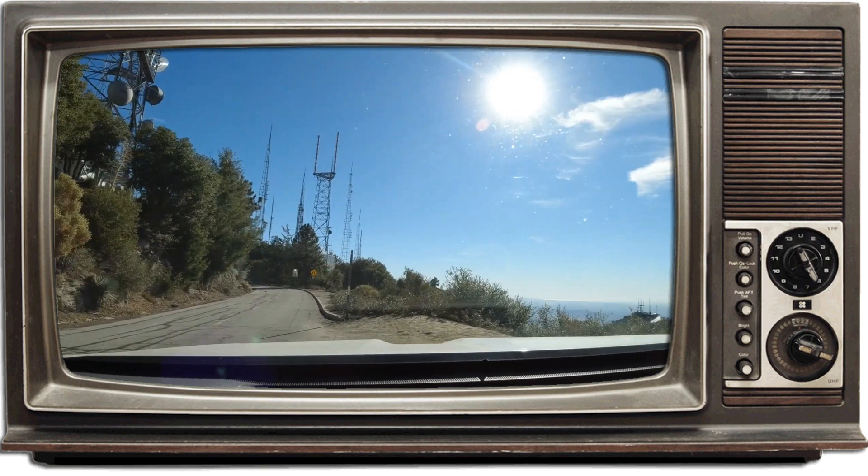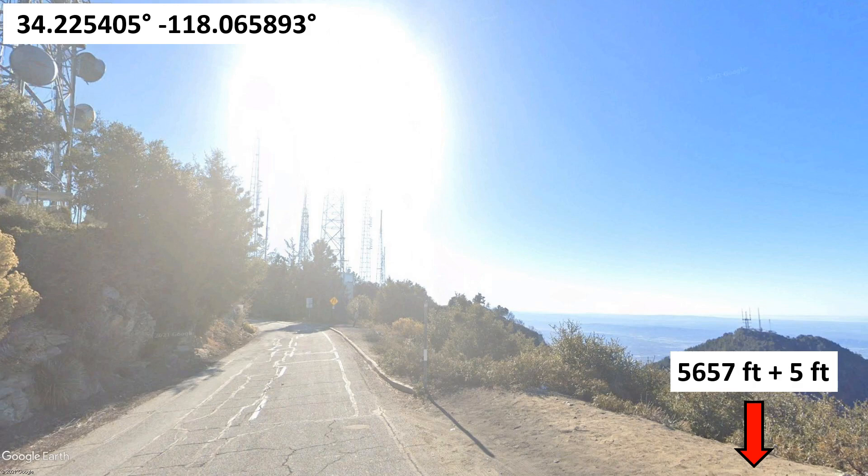Okay, so he doesn't give a specific observer location in the video, but he does show himself pulling over by the side of the road near Mount Wilson Observatory and sets up his telescope there. So here's a still from the video. And this was pretty easy to find on Google Earth. Coordinates are at the top left, and according to Google Earth elevation is 5,657 feet, and I'll add 5 feet for his tripod.